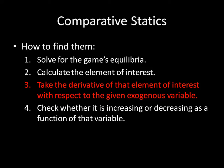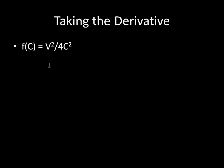Step three is to take the derivative of that element — V squared over 4C squared — with respect to the exogenous variable, which here is the cost parameter C. I'm treating this as F as a function of C, because V is just some fixed value. I can simplify this to V squared over 4 times C to the negative 2, which makes it easier to take the derivative. You need to be able to do calculus to calculate comparative statics — that's why people recommend doing a year of calculus before starting game theory.